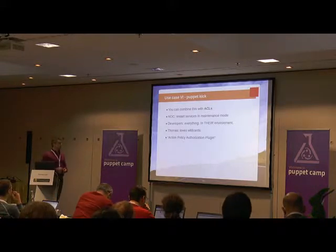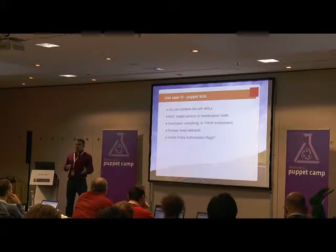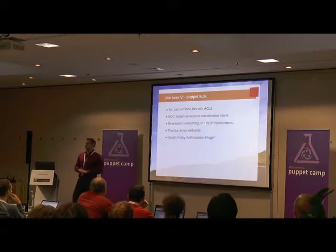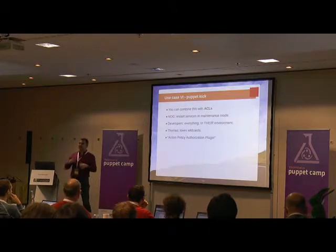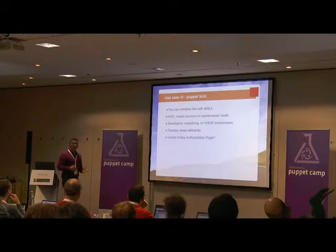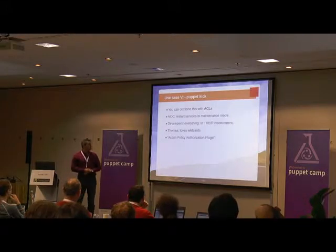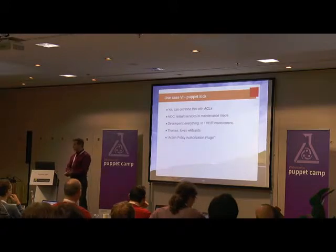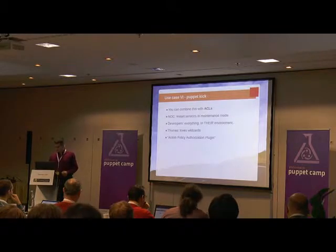You can combine this with access lists, and this is pretty cool. I can say, for example, my operations guys are allowed to start and stop services, but only on those that are in maintenance mode. If I disable Puppet via mCollective, I can create an access list based on the fact that those nodes are disabled — without even using facts. Then they're allowed to send commands to just those nodes. Developers are allowed to do everything, but only in their environments and not in production. What you need for something like this is a so-called action policy authorization plugin. It just works.